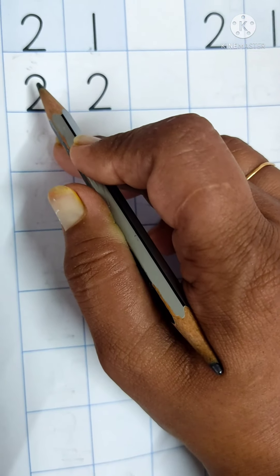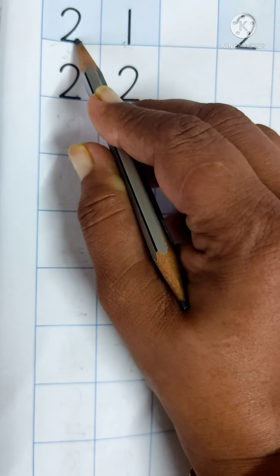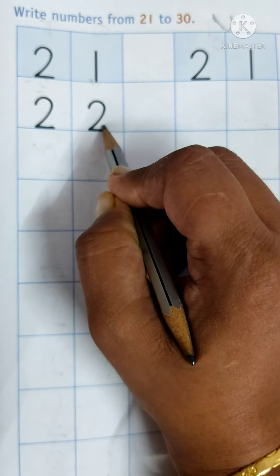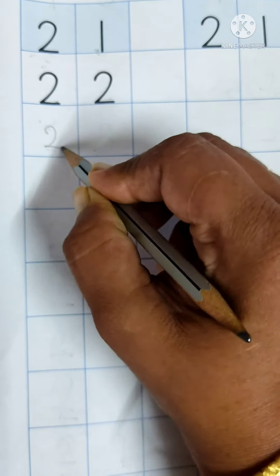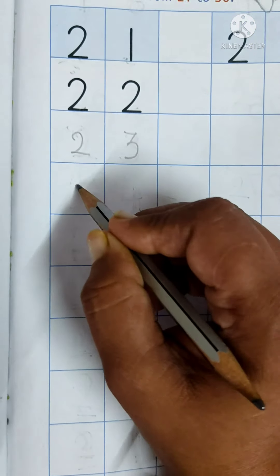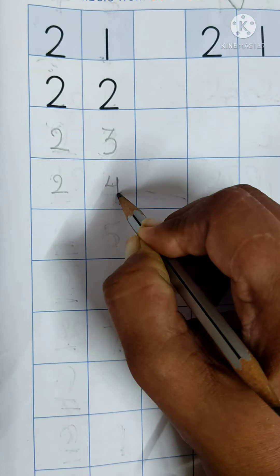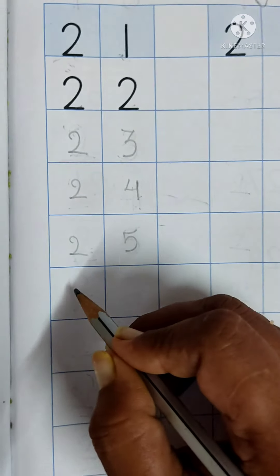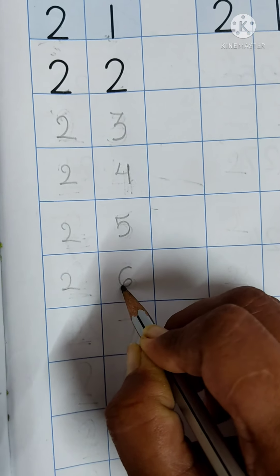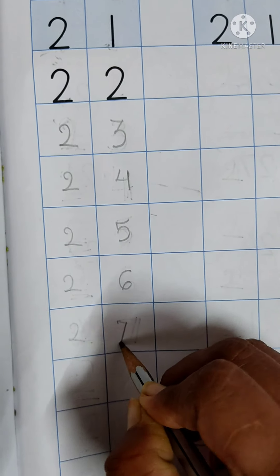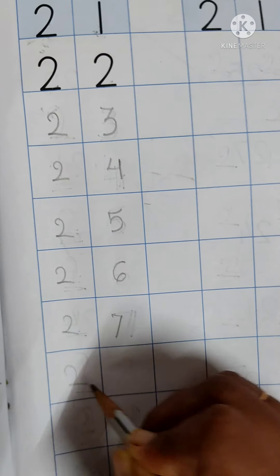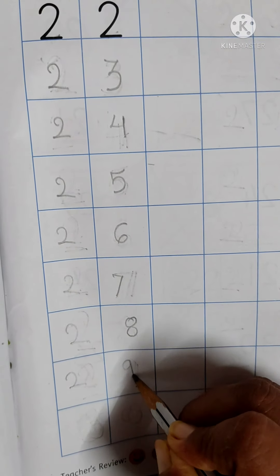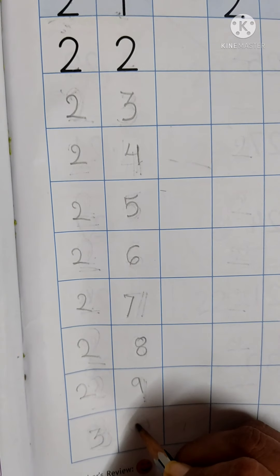So come on, you start to write with me. Say and write: 21, 22, 23, 24, 25, 26, 27, 28, 29, 30.